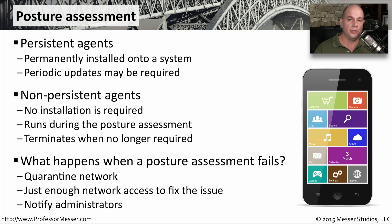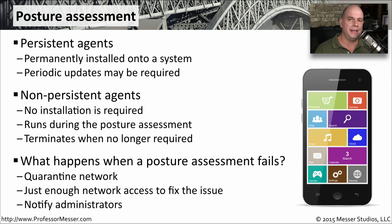But what if it fails this posture assessment? What if one of those criteria is not matching what is required for your network? One option is to quarantine the device — you can move it off to a separate VLAN, automatically transfer it to a place on the network where it can't cause any harm, but perhaps with just enough access to download and install the software it needs. Your posture assessment software might also contact the administrator so they can see what user is trying to connect what device to the network, and then determine what needs to be changed so that this device can properly pass the posture assessment.